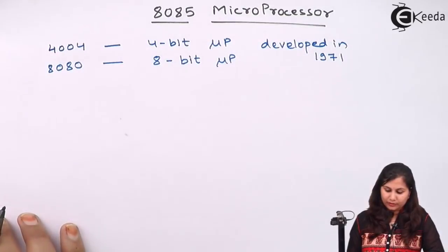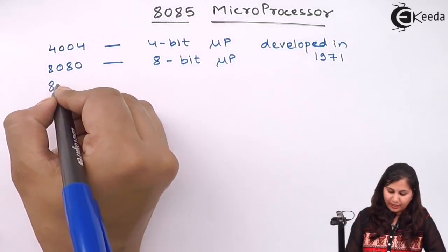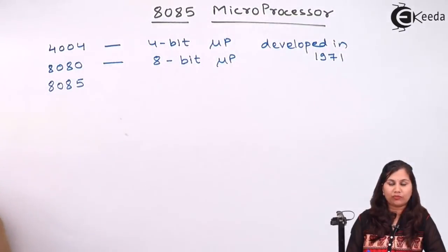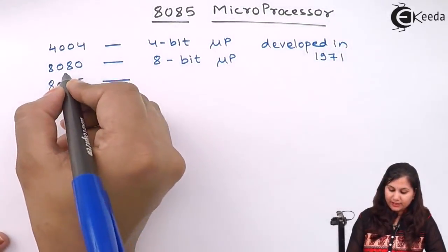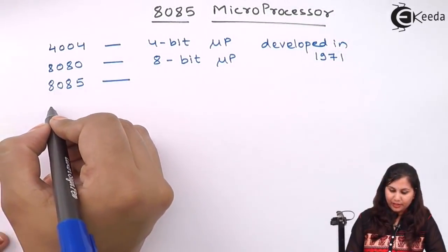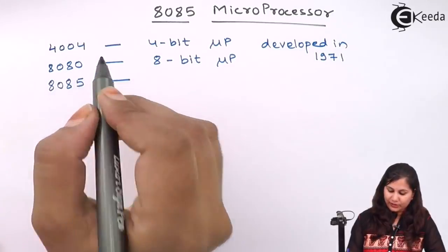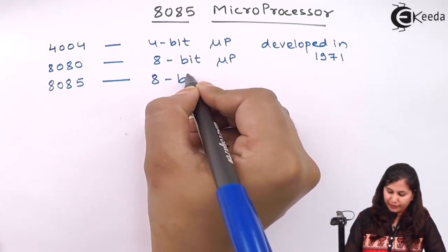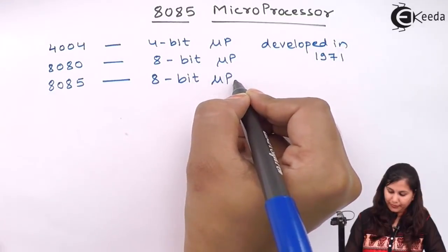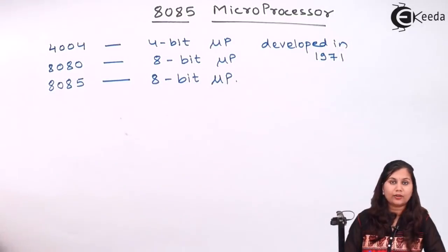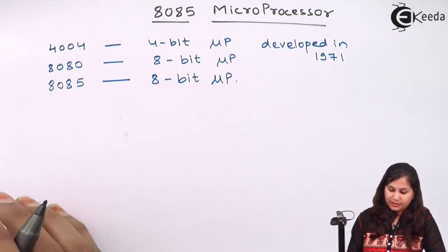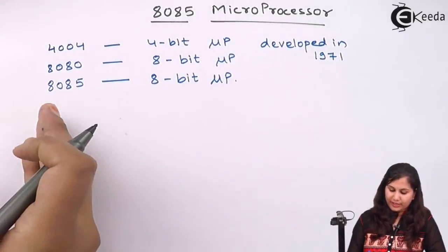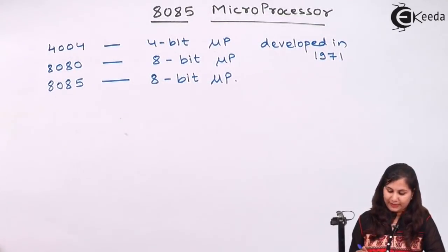So after it, another microprocessor, the 8085, was developed. It was the successor of the 8080 and it is also an 8-bit microprocessor. Now let us study the basic features of this 8085 microprocessor.